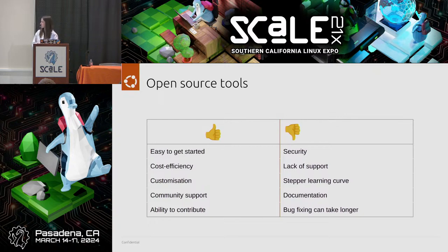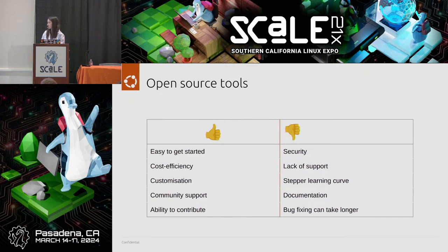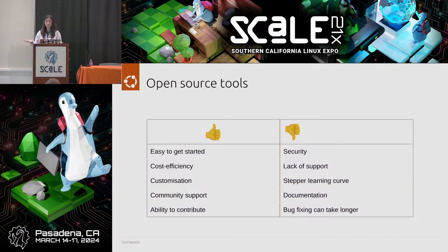When it comes to open source tools used in the machine learning world, it all starts with Linux and Ubuntu, then goes towards Jupyter Notebooks, Python, PyTorch — there are plenty of programming languages and tools. It's easy to get started. Deploying Jupyter Notebooks is something everyone can do, and if it fails, look on community forums and you'll find the answers.